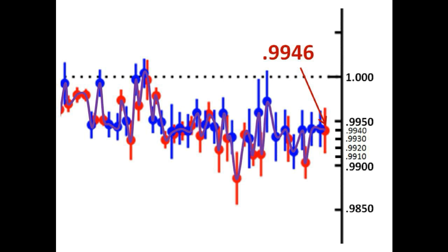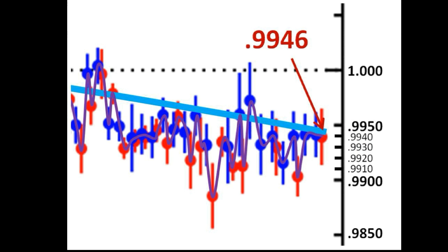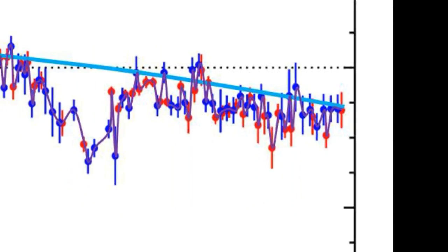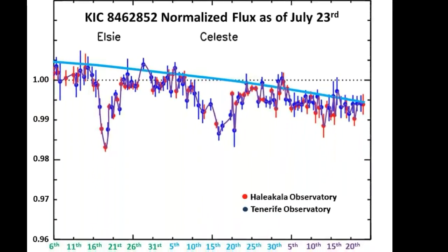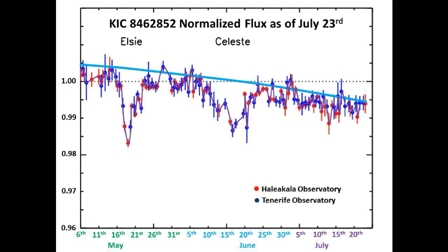Inserting the curve of the long-term accelerated dimming of Tabby Star, we have the following blue line that represents the long-term accelerated dimming curve and the reference nominal flux line. You can see that Tabby Star is really at the nominal flux level — we are not in a short-term dimming event. This persisting depression below the stagnant nominal flux line is an artifact of the long-term accelerating dimming of Tabby Star.